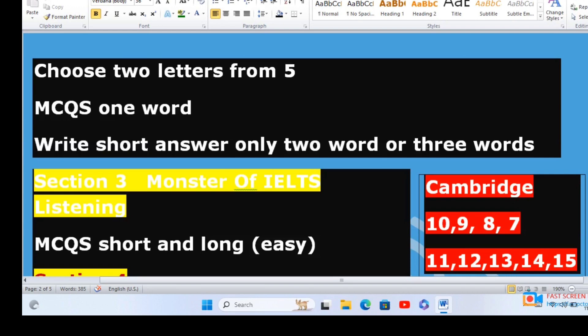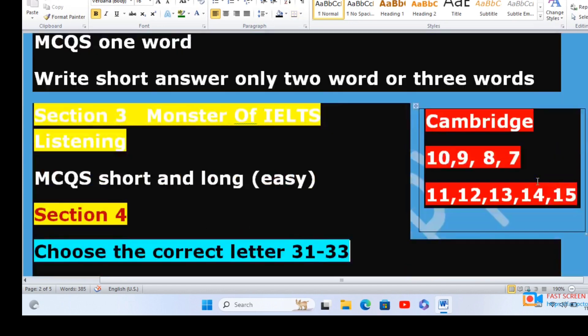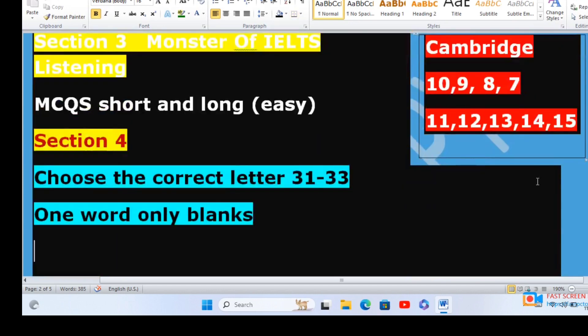In section three there will be short and long MCQs. You have to focus on the MCQs. What you have to do is underline the main two things and then match the underlying keywords with the question. For listening, if you want to score high, then Cambridge book 7 till 14 you have to practice at home.